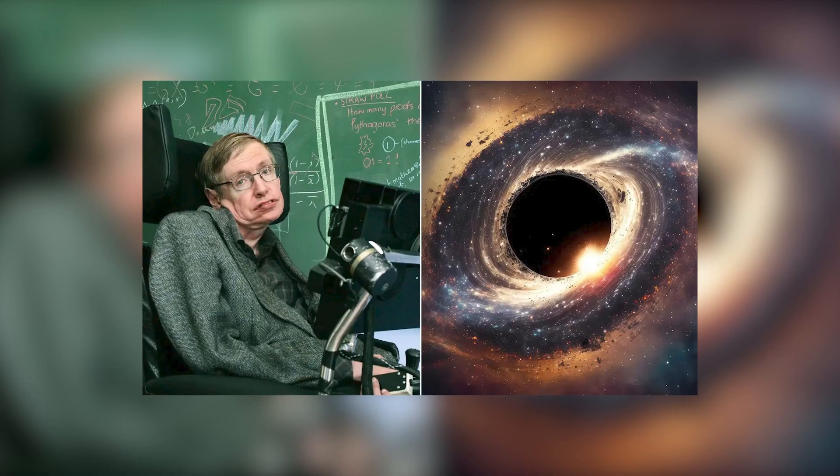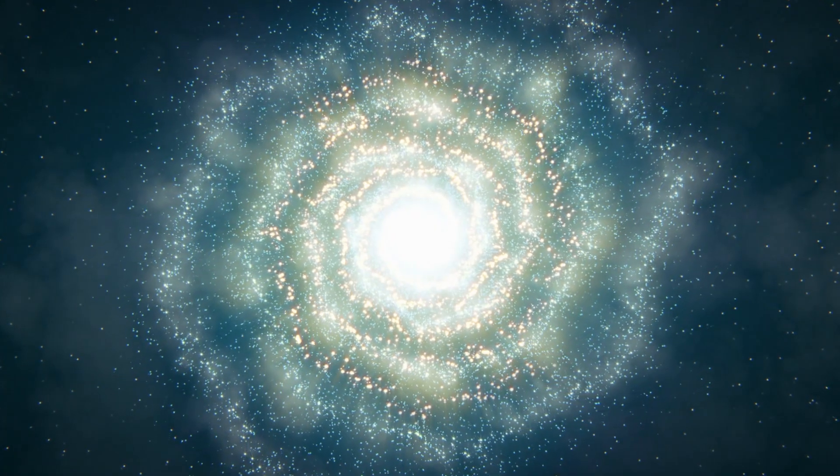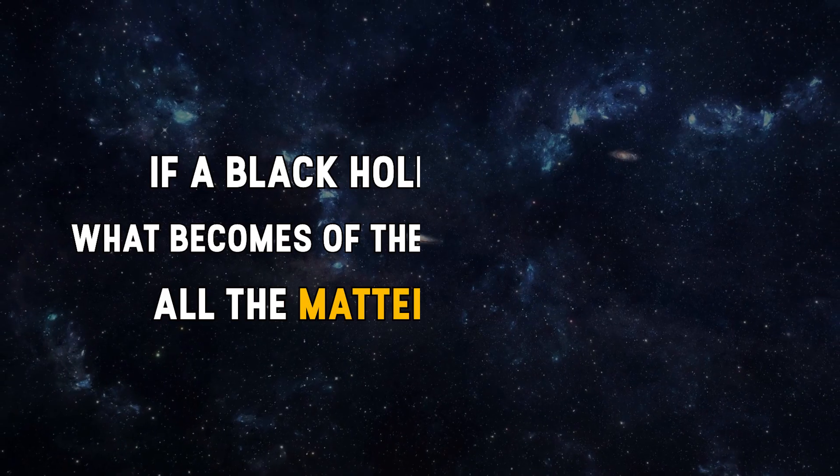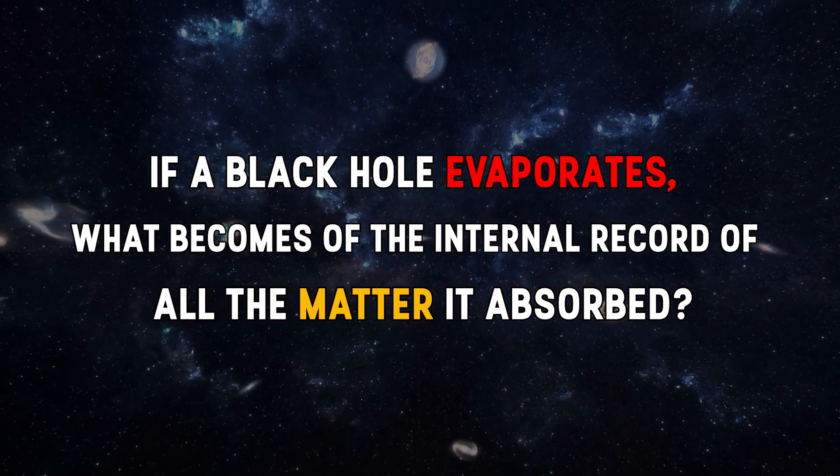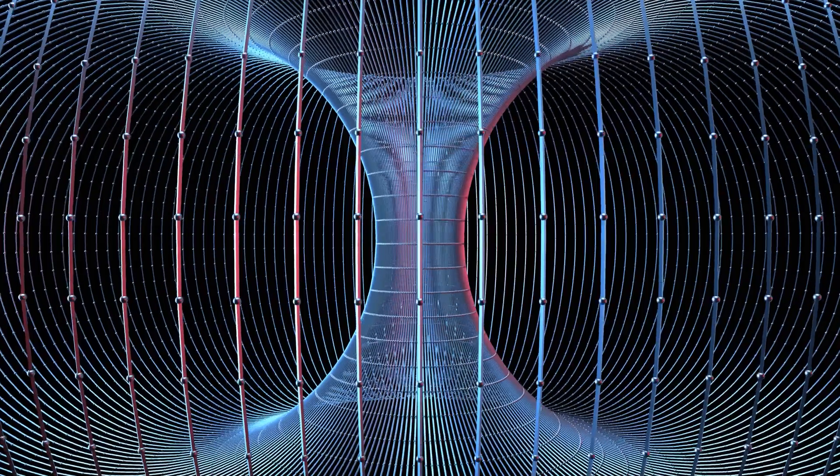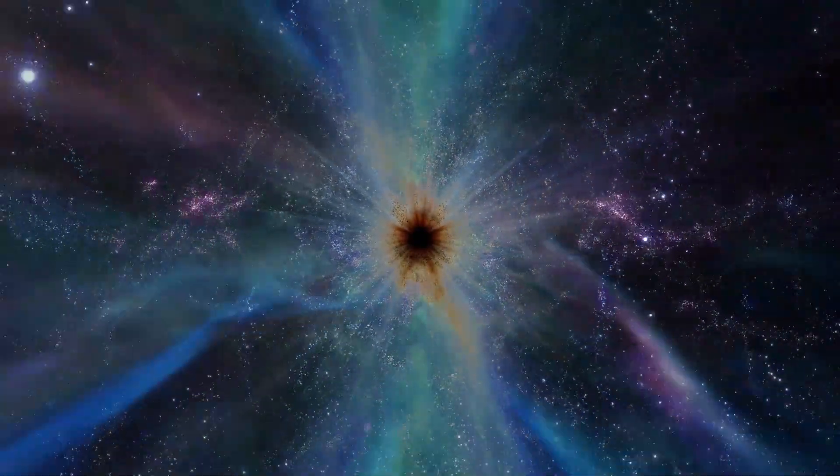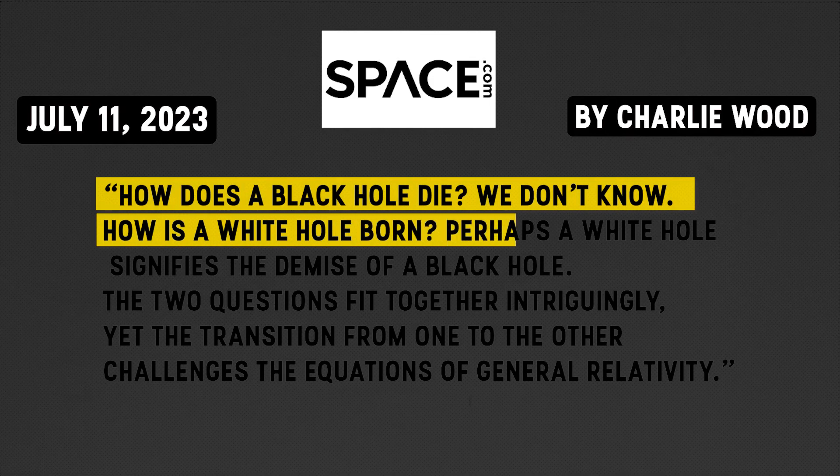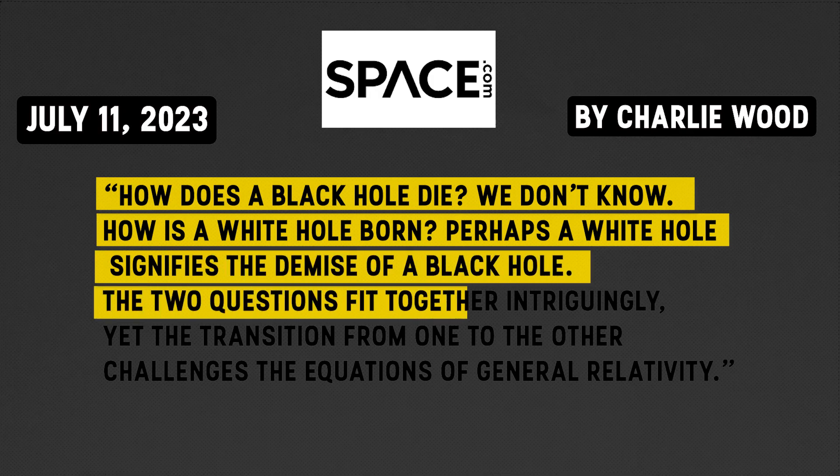Since the 1970s, when Stephen Hawking realized that black holes emit energy, physicists have engaged in discussions about how these entities might eventually diminish and fade away. The question arises, if a black hole evaporates, what becomes of the internal record of all the matter it absorbed? This presents a riddle, as general relativity does not permit the information to escape, while quantum mechanics prohibits its erasure. We don't know how black holes meet their end. Physicist Carlo Ravelli said, how does a black hole die? We don't know. How is a white hole born? Perhaps a white hole signifies the demise of a black hole. The two questions fit together intriguingly.